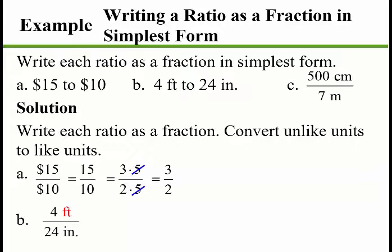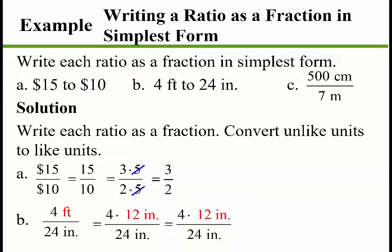Next, 4 feet to 24 inches. First, convert feet to inches: 1 foot equals 12 inches. Simplify — the 12 inches cancels with 24, making it 2. The inches cancel with inches, leaving 4 over 2, which simplifies to a 2 to 1 ratio.